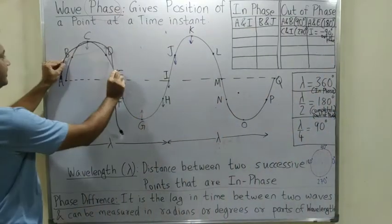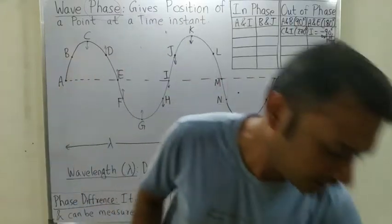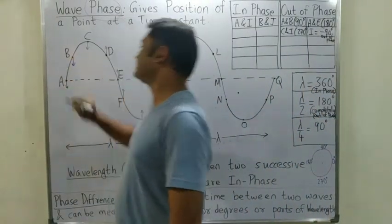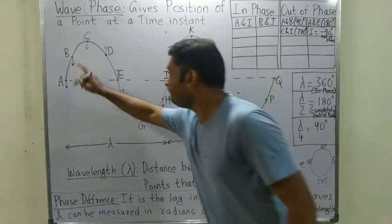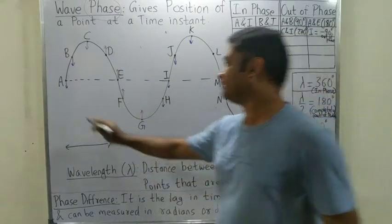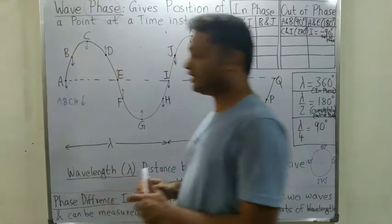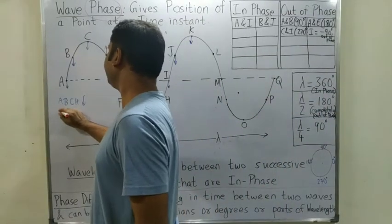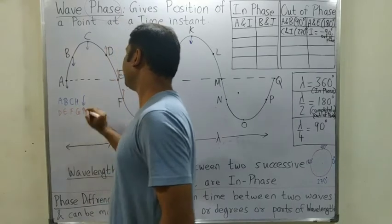Think about it: when this wave moves forward, B point will go down and A point will also go down. So the points A, B, C, and H are all moving down. And points D, E, F, G are moving up.